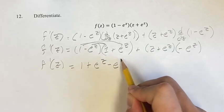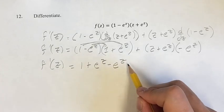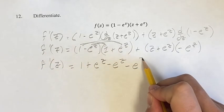minus 1 e to the z is minus e to the z, minus e to the z times e to the z is minus e to the z plus z is 2z.